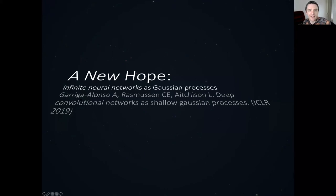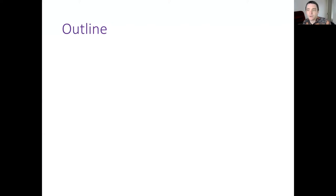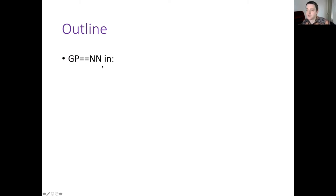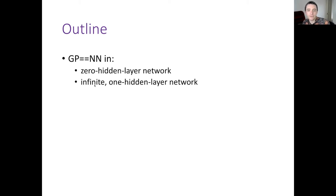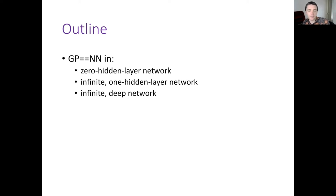For the first paper, 'A New Hope — Infinite Neural Networks as Gaussian Processes,' instead of going through convolutional network details, I'll use it as a jumping-off point for background on the infinite network literature. We're identifying Gaussian processes with neural networks in increasingly complicated settings: starting from a zero hidden-layer network (Bayesian linear regression), then an infinite one-hidden-layer network from Radford Neal (1996), then an infinite deep network from around 2018, and finally convolutional architectures like ResNets.